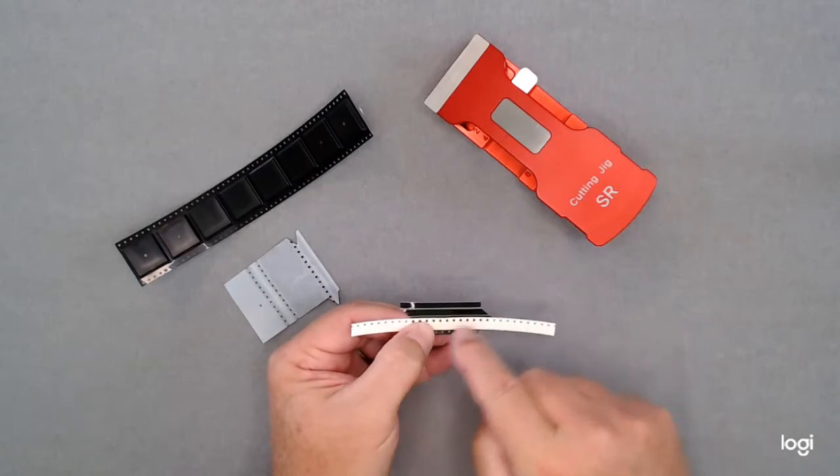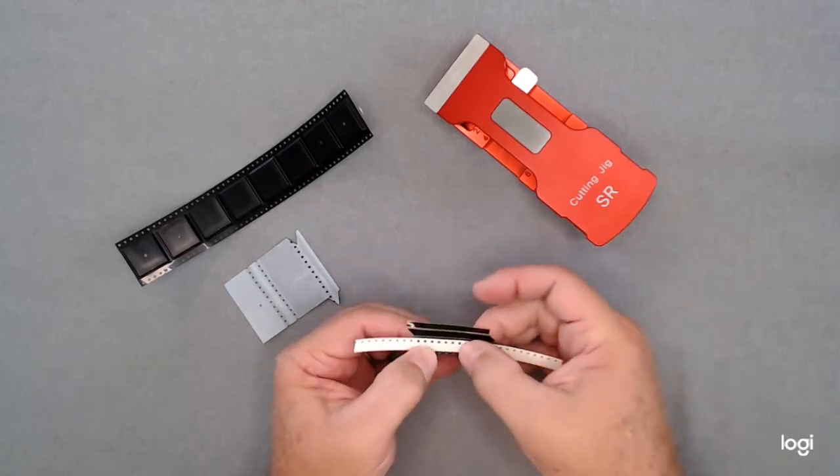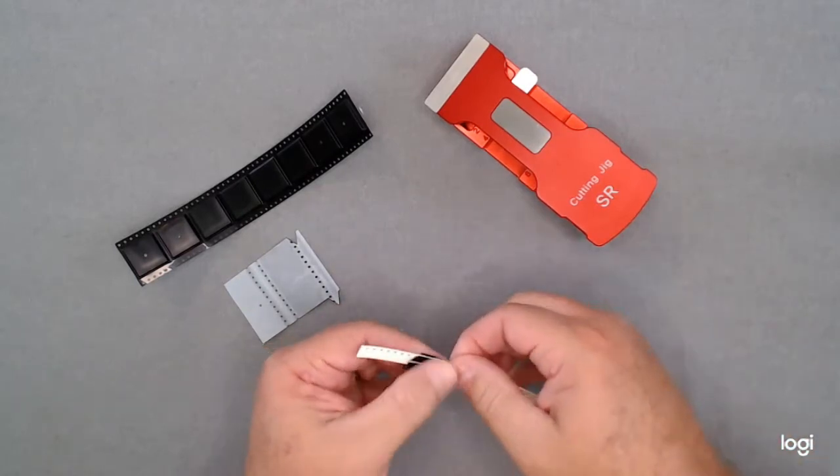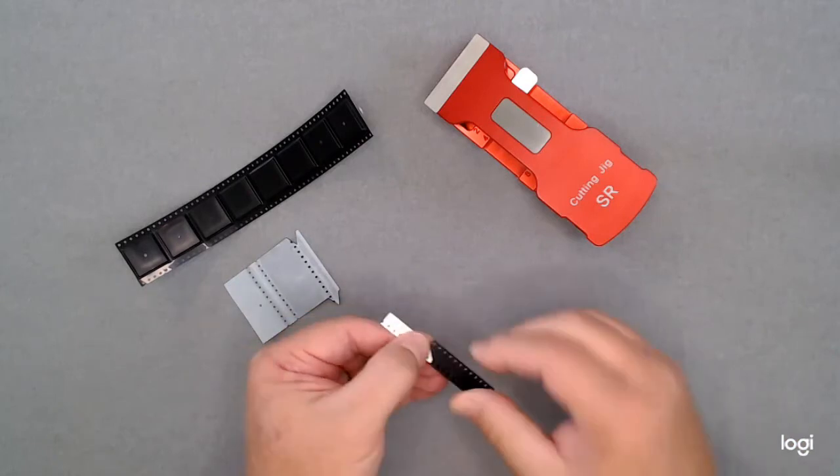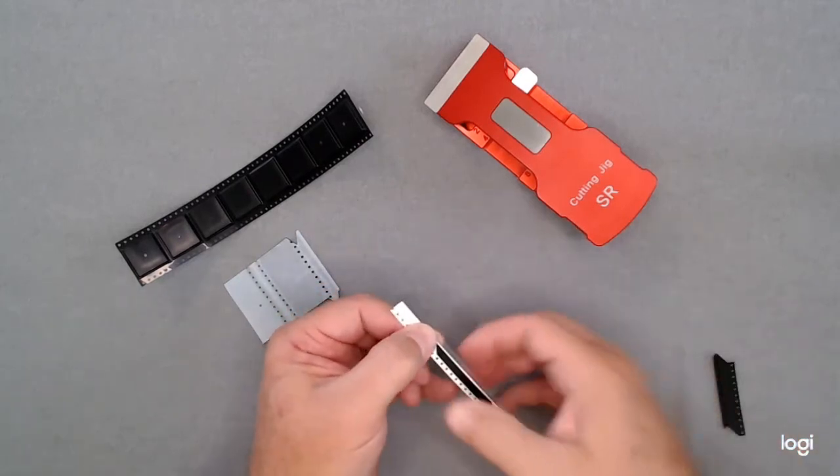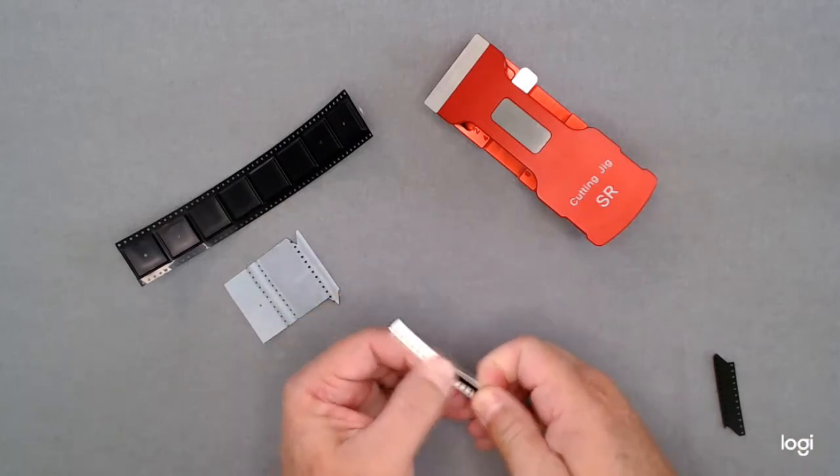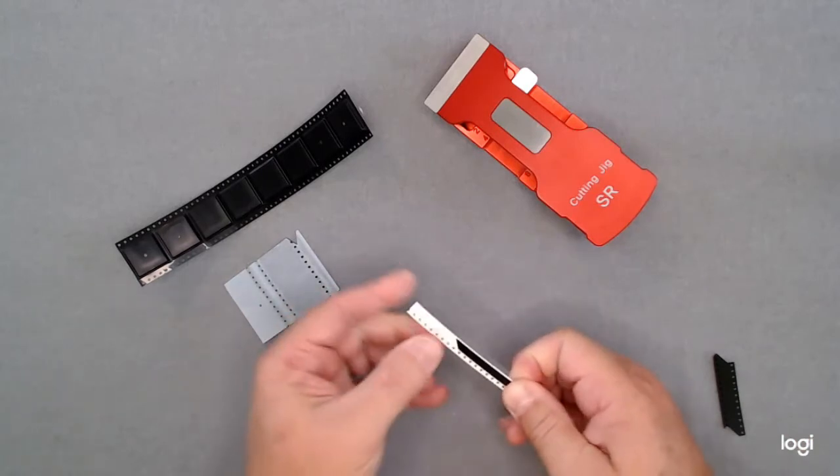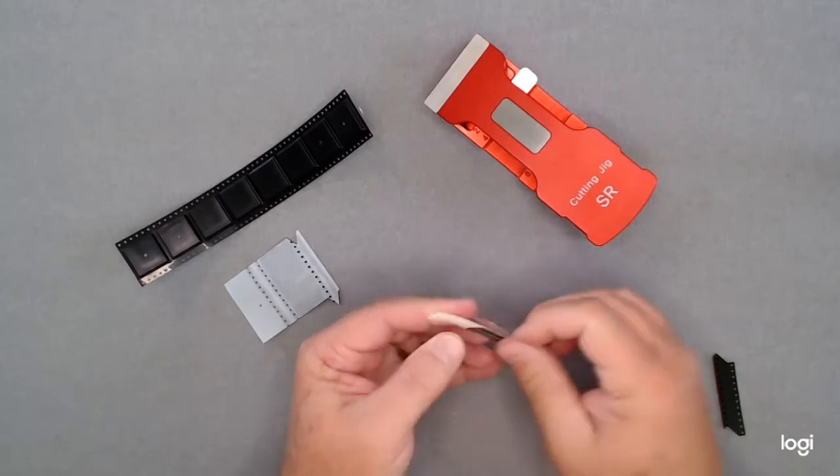Then you have alignment jigs here on the side that help you align it. You get it started on here just lightly. Pull the pin jig system out, seat the tape onto the carrier tape, pull the hard plastic cover.